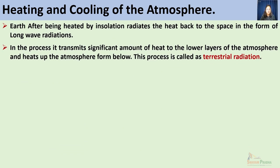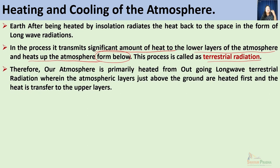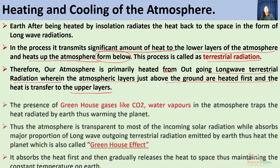Earth, after being heated by insolation, radiates the heat back to space in the form of long wave radiations, transmitting significant heat to the lower layers of the atmosphere — particularly the troposphere — heating the atmosphere from below. This process is called terrestrial radiation or outgoing terrestrial radiation, also called effective radiation, because our atmosphere is primarily heated through this process. The atmospheric layers just above the ground surface are heated first through conduction and then heat is transferred to upper layers through convection.